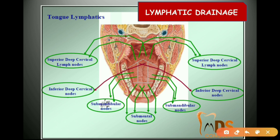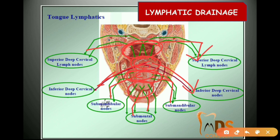For lymphatic drainage: the tip of the tongue drains into the submental lymph nodes; the anterior two-thirds into the submandibular lymph nodes; the posterior one-third into the inferior deep cervical lymph nodes; and the posterior-most part into the superior deep cervical lymph nodes. Importantly, in carcinoma of the tongue, even the contralateral lymph nodes can be palpable — if affected on the right side, the left side lymph nodes may also be palpable.